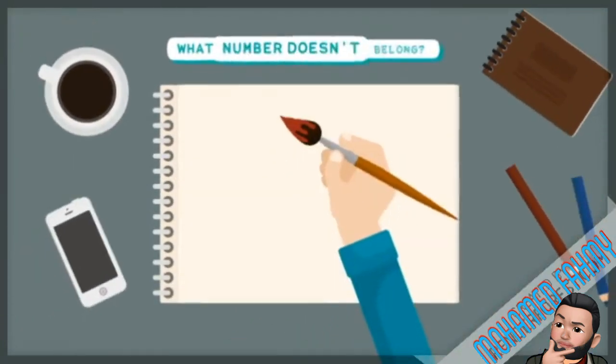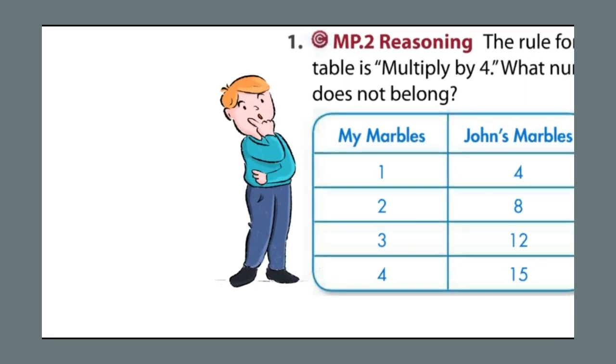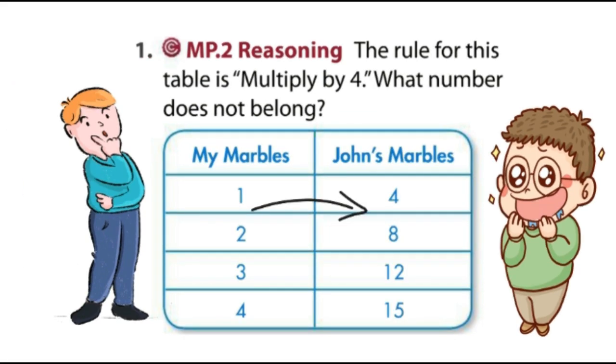What number doesn't belong? Which number is not related to the other numbers in the pattern? As you see guys, when I have one marble, John has four marbles. When I have two marbles, John has eight marbles. When I have three marbles, John has 12 marbles. So what is the pattern here?